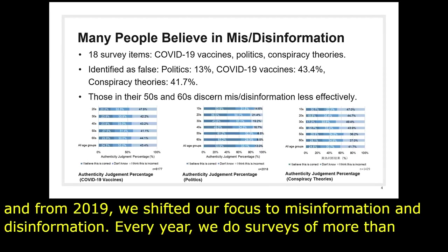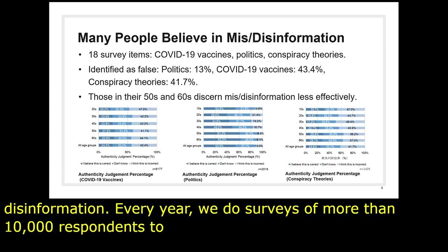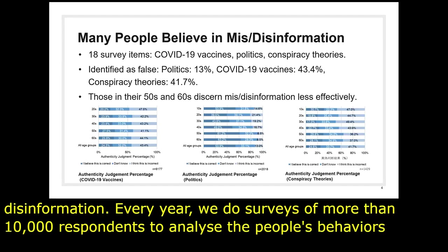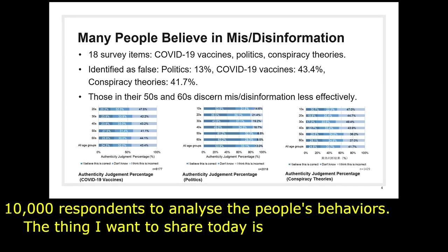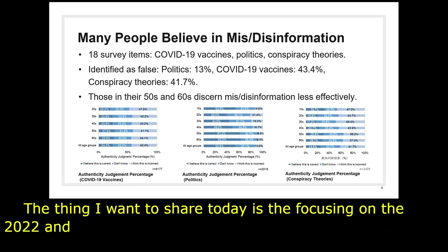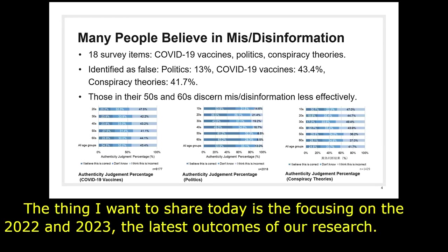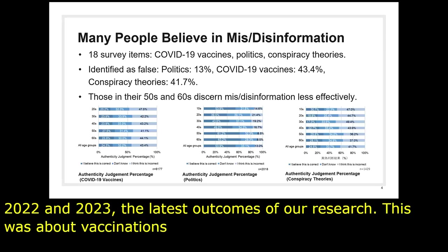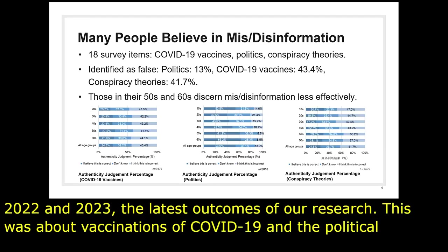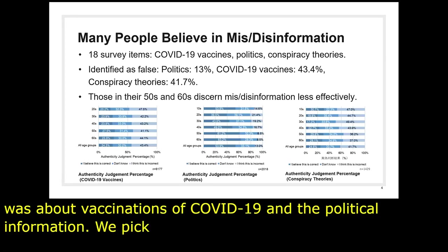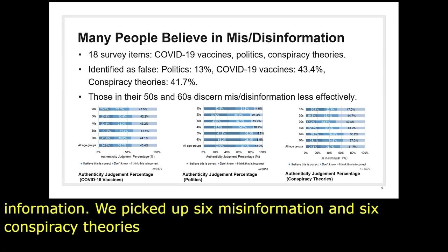今日のイベントに関わるところで言いますと、日本政府の総務省と共同研究をしたり、メディアリテラシー教育教材を作るなどで連携をしております。今日皆さんにご紹介したいのは、私がGoogle Japanと共に行っているイノベーション日本というプロジェクトの研究成果です。2015年からこちらの研究プロジェクトをやっておりますが、2019年から偽情報、誤情報をテーマに実証研究をしております。毎年1万人を超える人を対象としたアンケート調査データから人々の行動を分析しています。 [Relevant to today's event: I collaborate with Japan's Ministry of Internal Affairs and Communications on joint research and creating media literacy educational materials. Today I'd like to share research from the Innovation Japan project conducted with Google Japan. We've been running this project since 2015, and since 2019 have focused empirically on disinformation and misinformation, analyzing the behavior of over 10,000 people annually through survey data.]